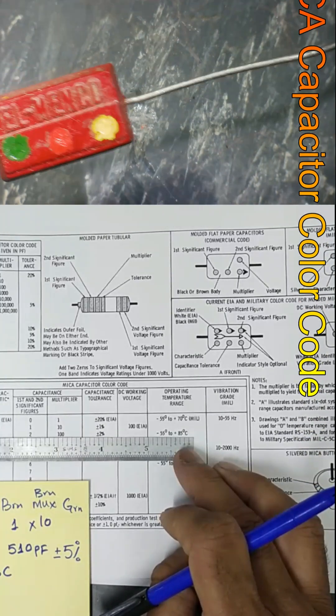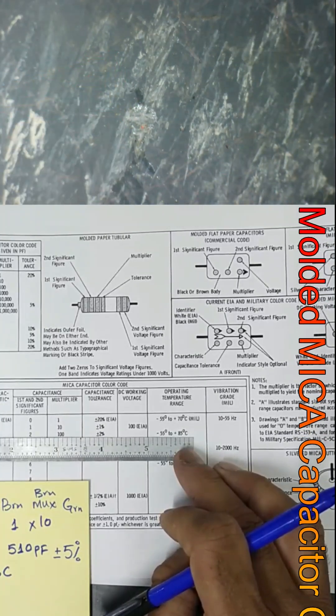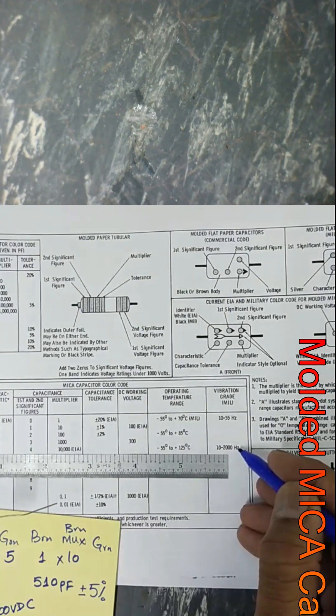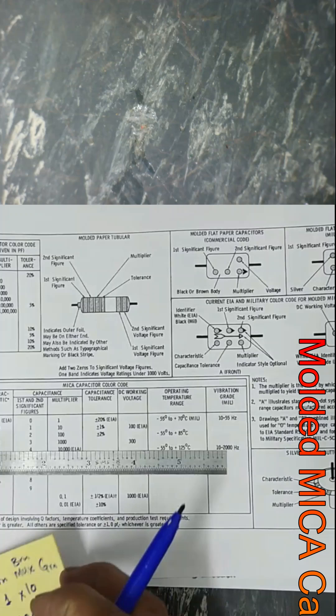And the last band, yellow, indicates vibration grade: 10 hertz to 2 kilohertz. This is the vibration grade.